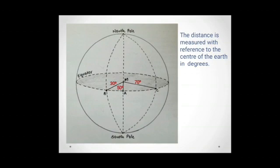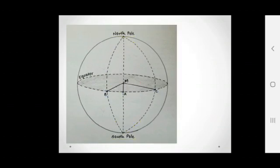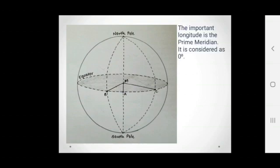Now with respect to the equator, we draw an ellipse from the north pole to the south pole going through the points. That is ellipse B, ellipse A, and ellipse C. Now these ellipses are actually semicircles. As we have important parallels in the latitude, that is the equator, the longitude also has an important meridian. This meridian is called the prime meridian and is considered as 0 degrees.